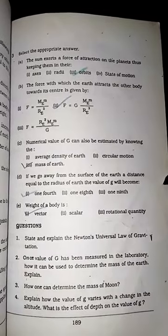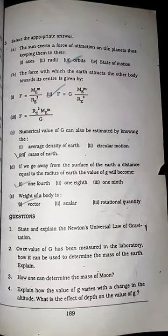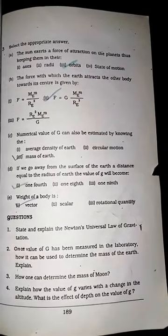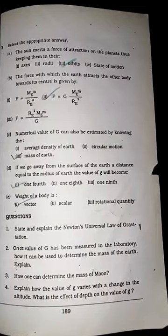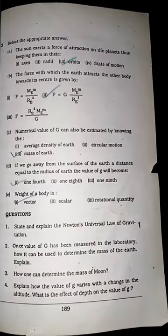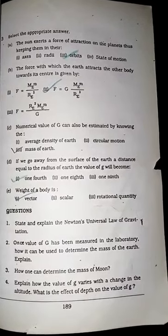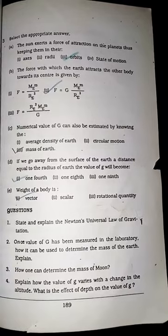Gravitation. Let's get started. First MCQ A: The sun exerts a force of attraction on the planets thus keeping them in their orbit. The planet stays in its orbit because the force of attraction from the sun keeps it there. So the correct option is 3.